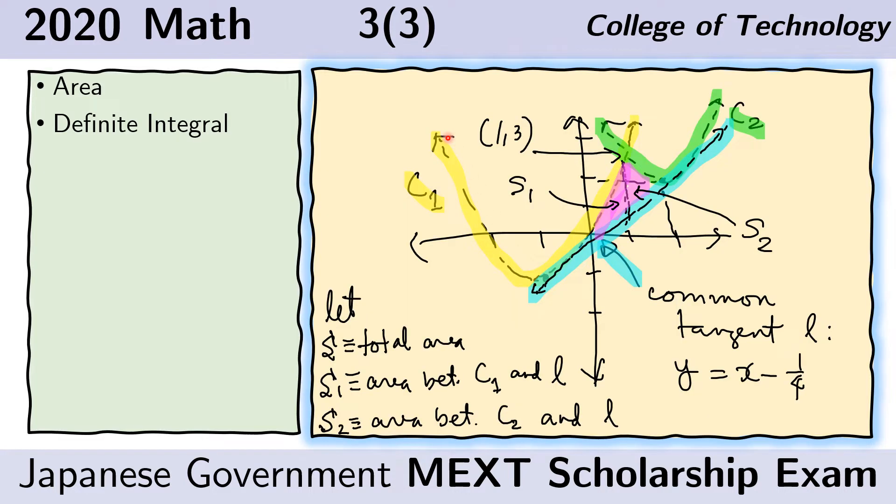Here we sketch the curves. The yellow curve is C1. The green curve is C2. From problem 3-1, we know that they intersect at this point (1, 3). From problem 3-2, we know that this common tangent line, which is depicted in blue, is given by this equation. Now we are asked to find the area of the pink region.